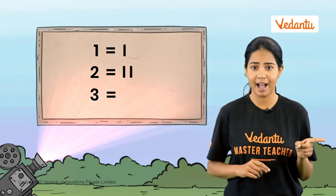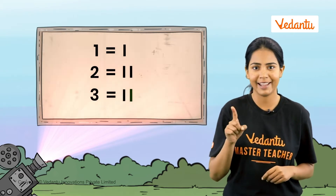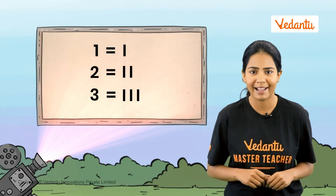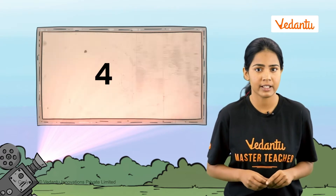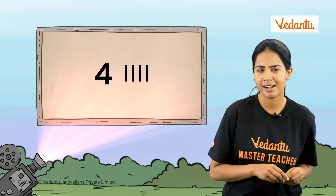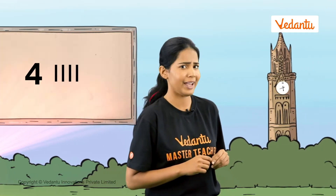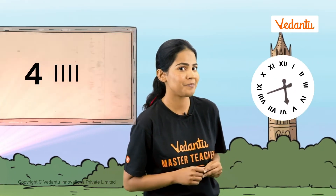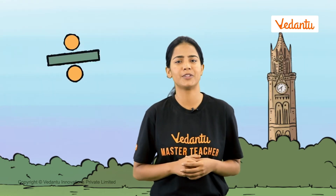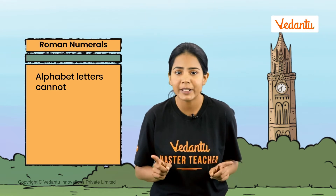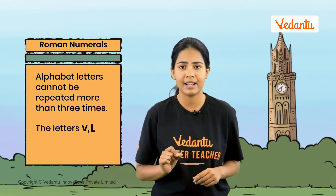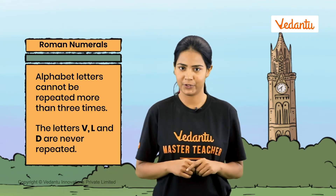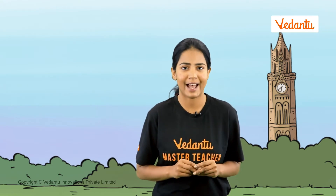We know I is one. To write two and three in Roman numerals, it will be II and III — two times I and three times I. How about four? Is it IIII? You can see on this clock — no, you can't. There are basic rules that Romans followed: a letter cannot be repeated more than three times, and specifically the letters V, L, and D are never repeated.